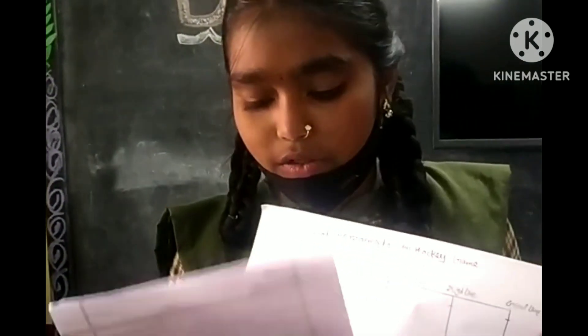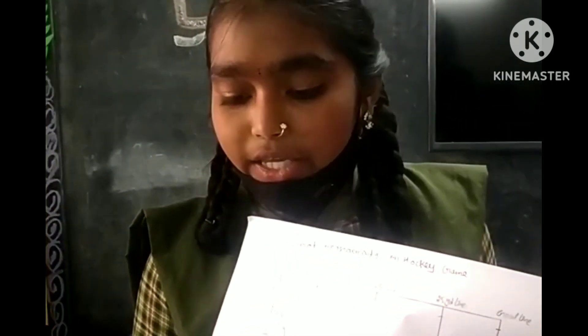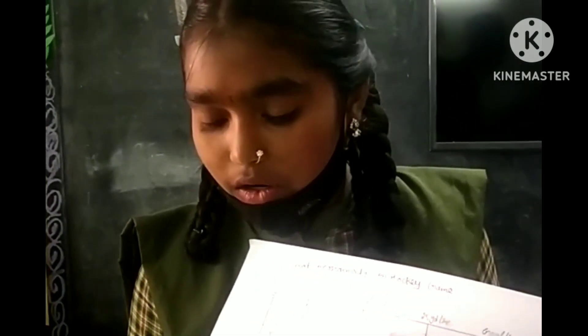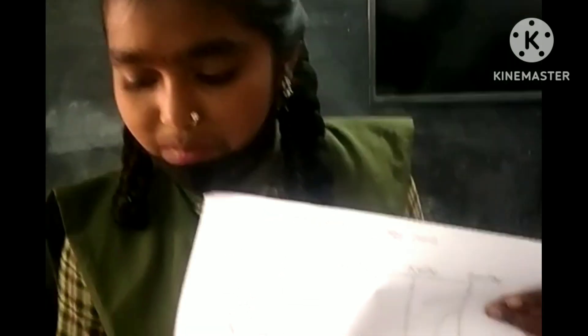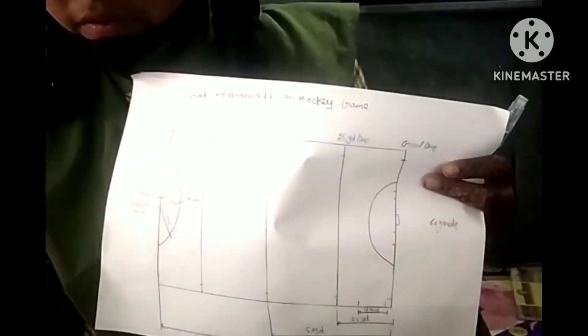Now I am going to explain about the court. Hockey is played on a rectangular field measuring 91.4 meters.